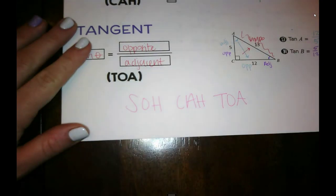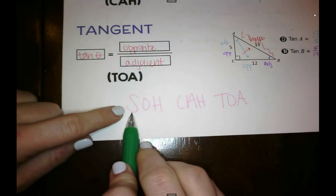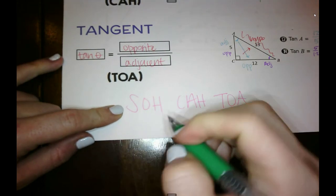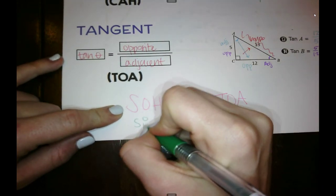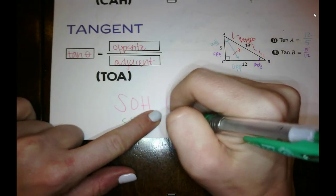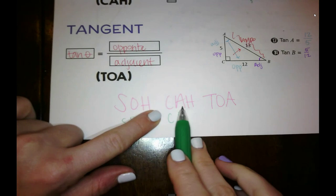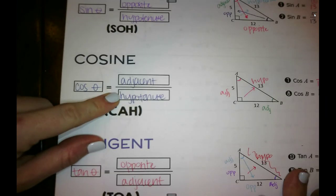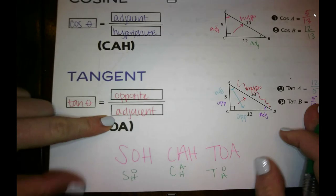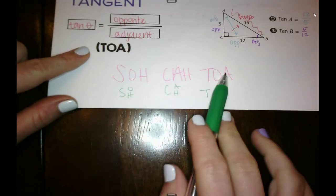Then you can remember what goes where because sine is opposite over hypotenuse, right? Opposite over hypotenuse. And cosine is adjacent over hypotenuse. And tangent is opposite over adjacent. Soh cah toa.